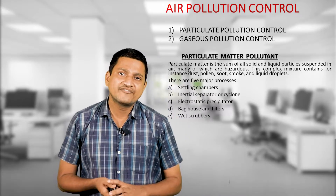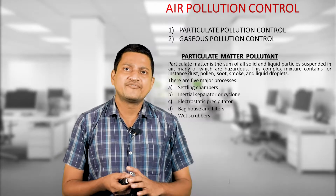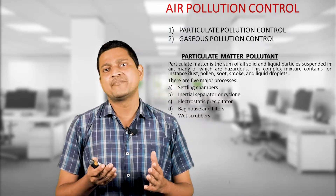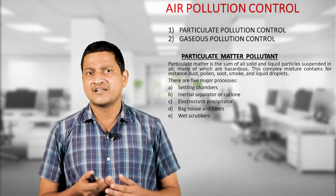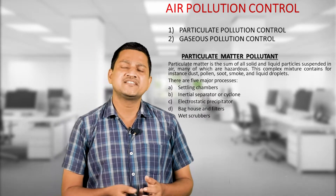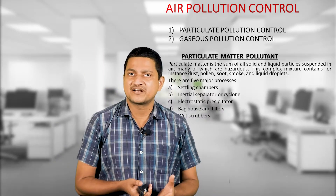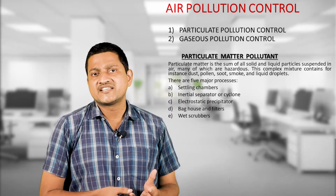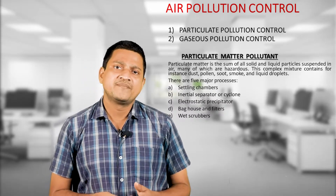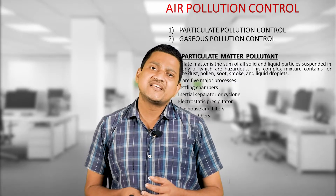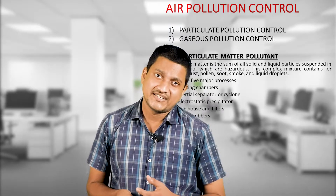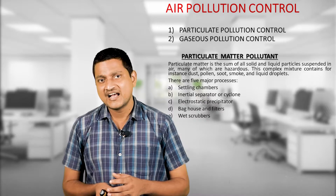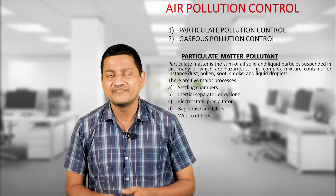There are five major processes to control particulate matter. These are: first, settling chamber; second, inertial separator or cyclone separator; third, electrostatic precipitator; fourth, baghouse or filters; and last, wet scrubbers.